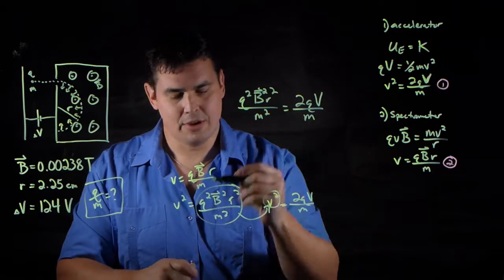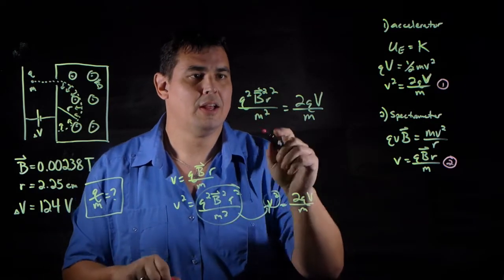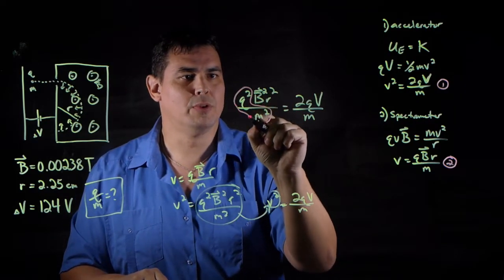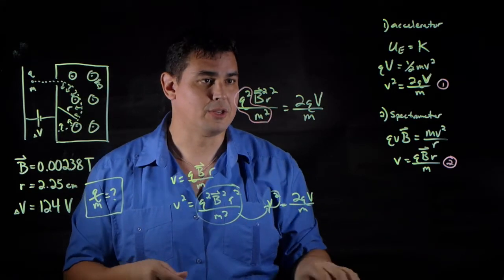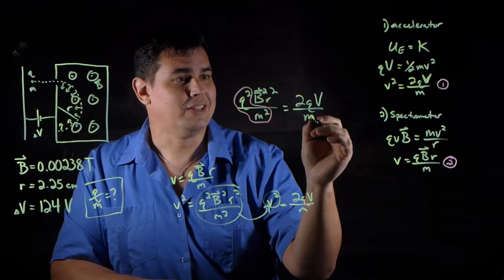When I do that, now I can solve for q over m. See how I have right here, I have q over m. I'm just going to try to get rid of everything. And it kind of works out. So look here...